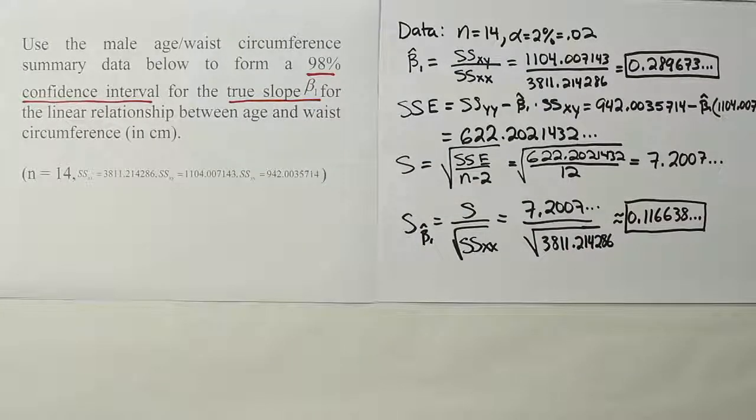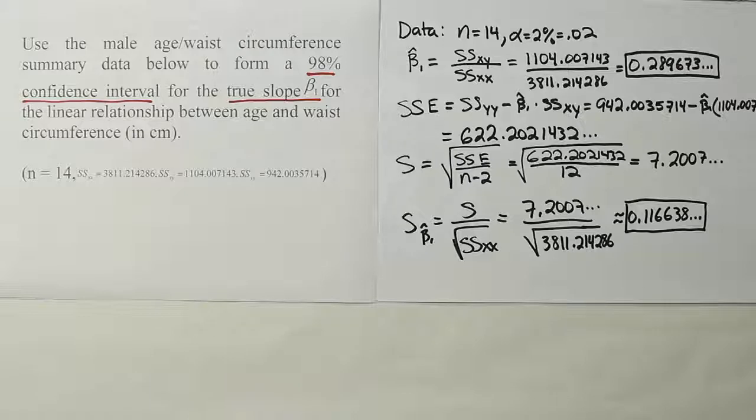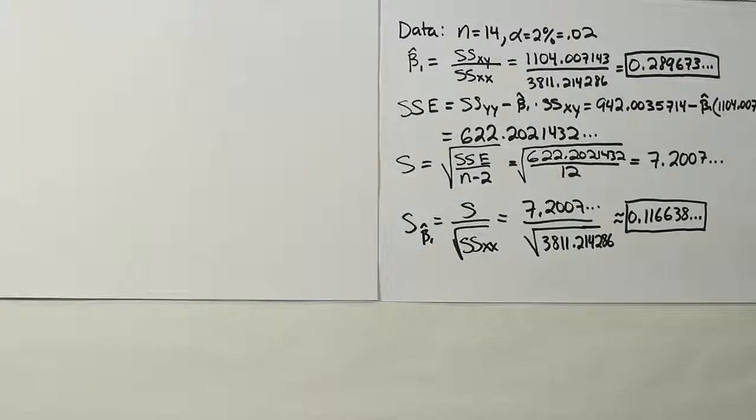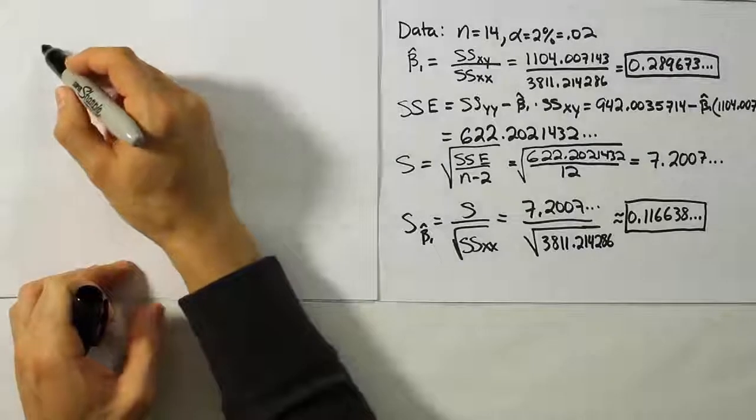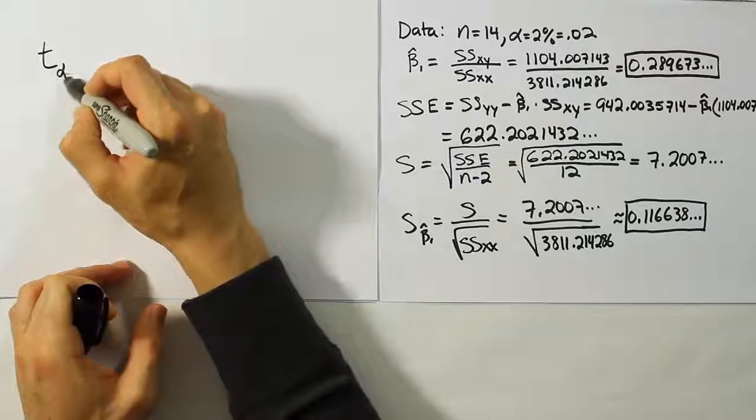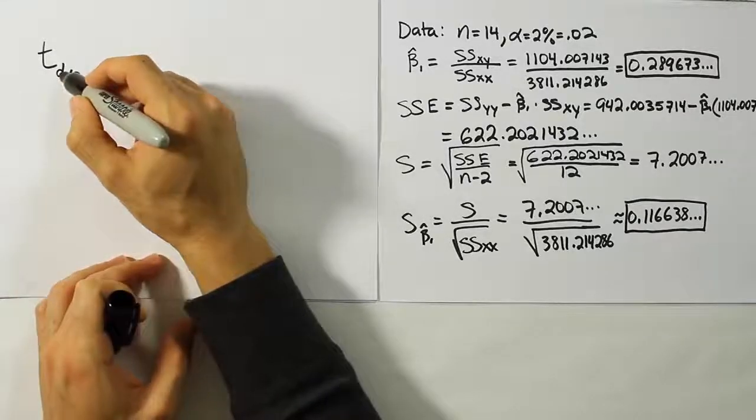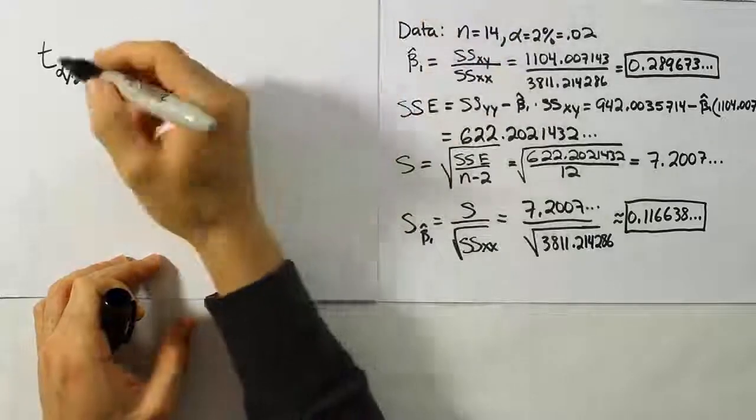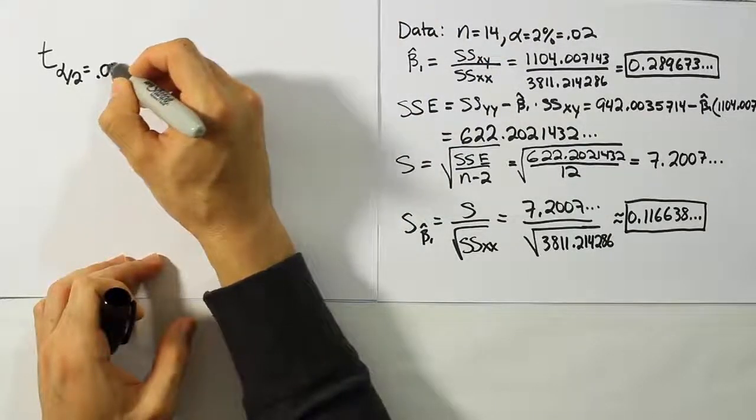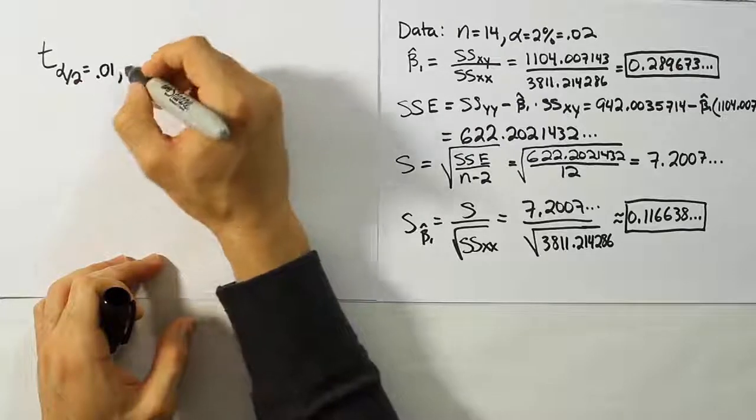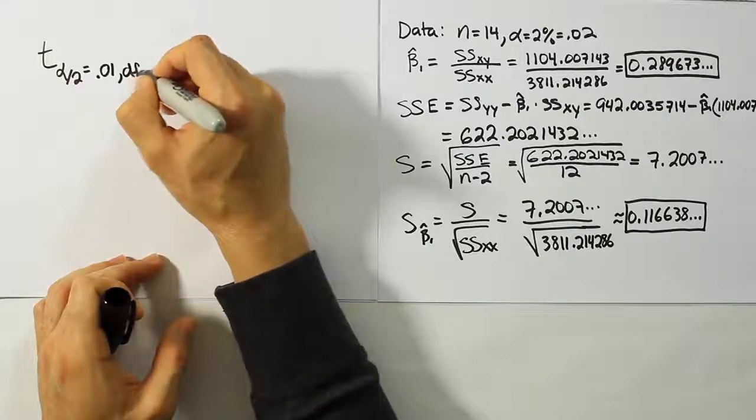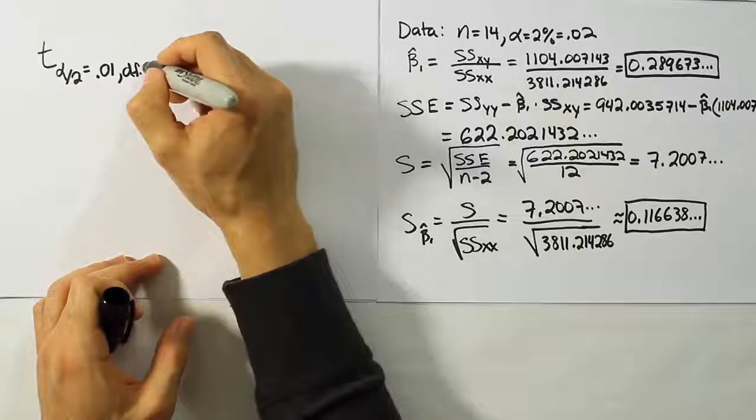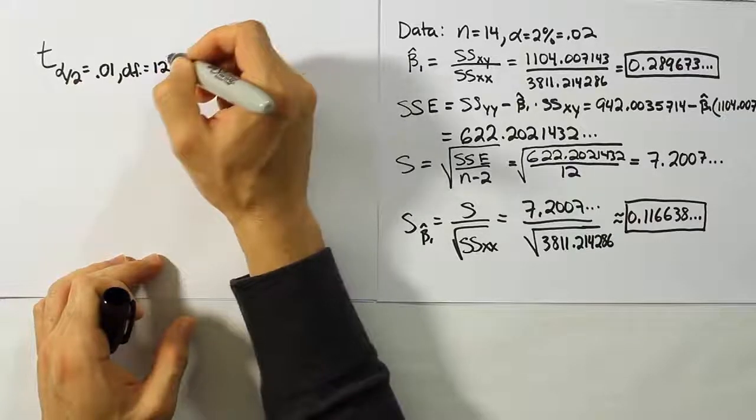Now, the next step is going to be to get our table value, T alpha divided by 2. Now, T alpha divided by 2, in this case, since alpha is 0.02, alpha divided by 2 will be 0.01. And then the degrees of freedom for the problem, since n is 14, will be n minus 2, or 12.